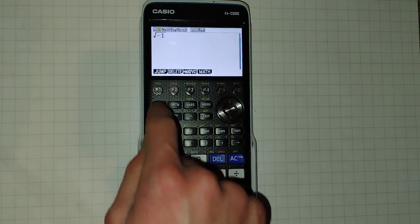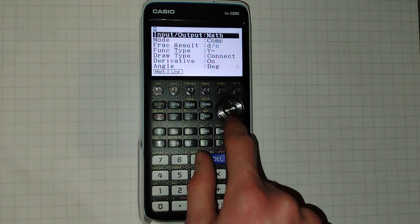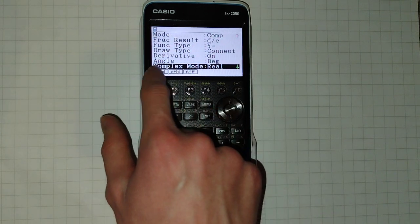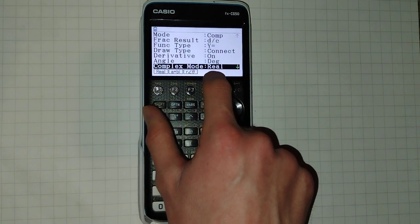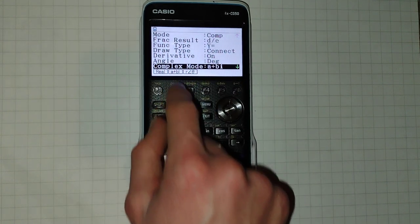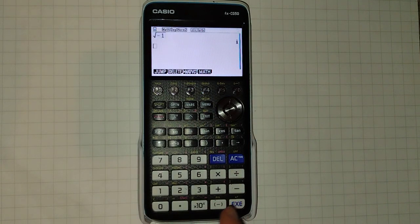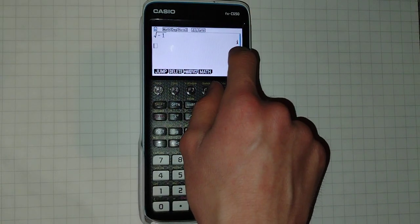To change this we're going to click shift, then menu to enter the setup menu, and scroll down to just below angle where we'll get complex mode. We can see it's set to real. We're going to set it to A plus B I. Click exit, then we can re-evaluate this and it will now work.